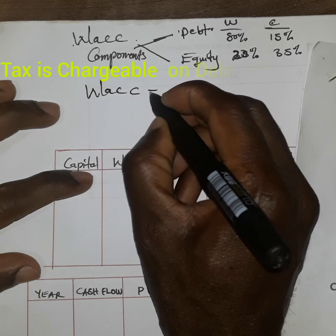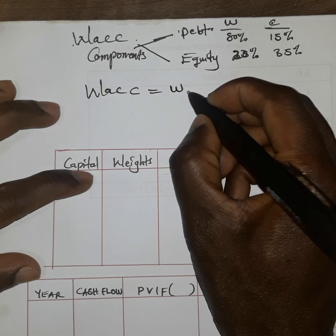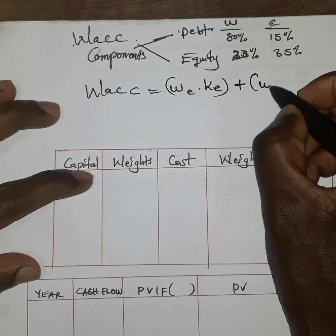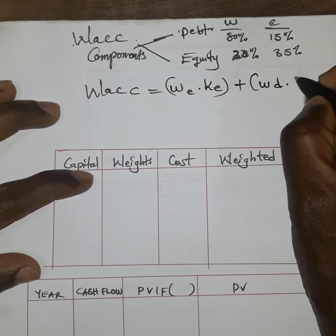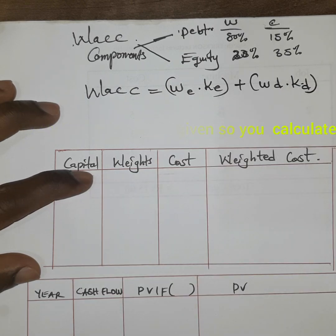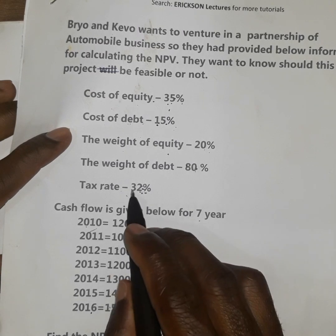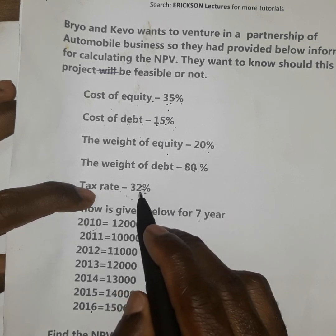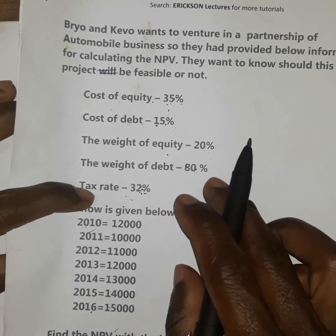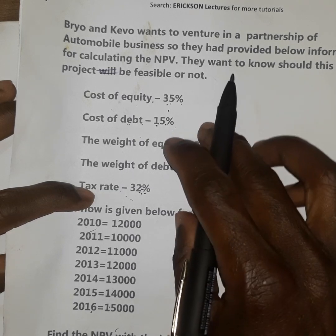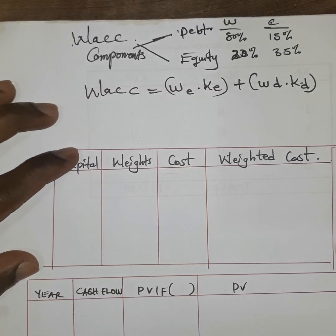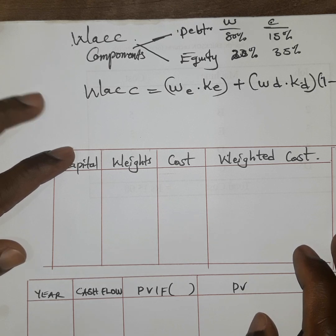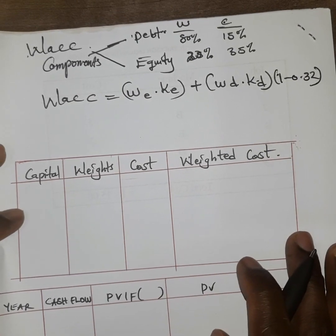To get WACC — the weighted average cost of capital — the formula is: weight of equity multiplied by cost of equity, added to weight of debt multiplied by cost of debt times (1 minus the tax rate). Since the tax rate is 32%, the after-tax component of debt is 1 minus 0.32, which equals 0.68. That 68% is the running component of debt and gives us our discounting factor.